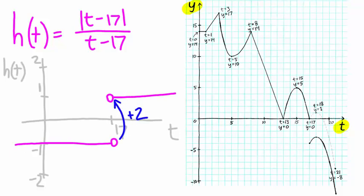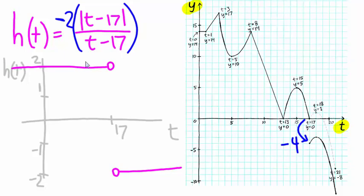But our graph of y of t didn't experience a jump of two units upward. It experienced a jump of four units downward. So we'll multiply this function by negative two. Now we've got a jump of four units downward.